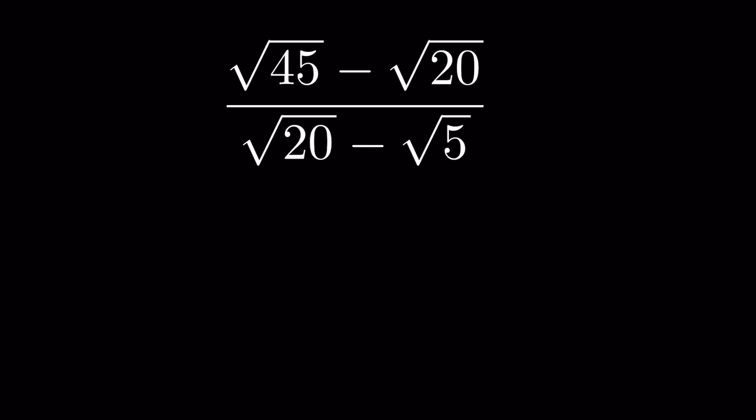We need to simplify: square root of 45 minus square root of 20, upon square root of 20 minus square root of 5. To simplify it, we rationalize the denominator.